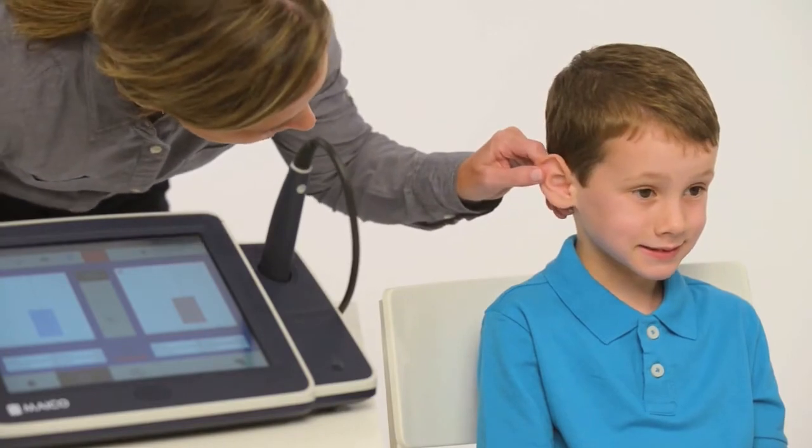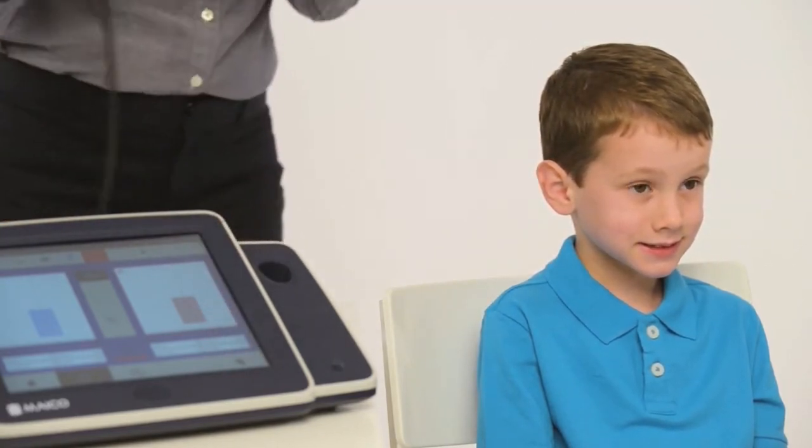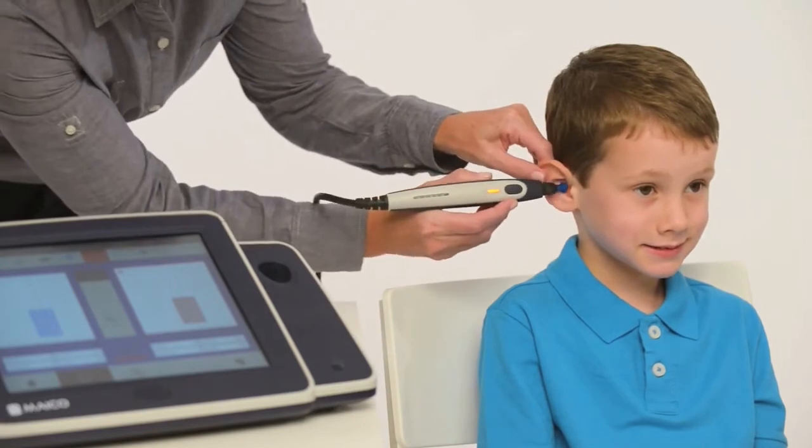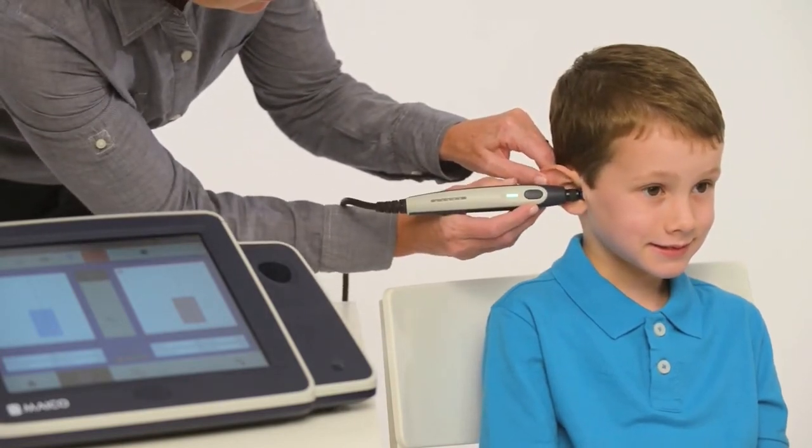Pull up and back on the ear while inserting the probe tip into the ear canal. The probe should be directed towards the nose. Once a seal is detected, the test will start automatically.